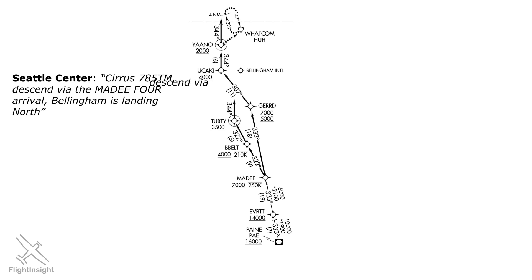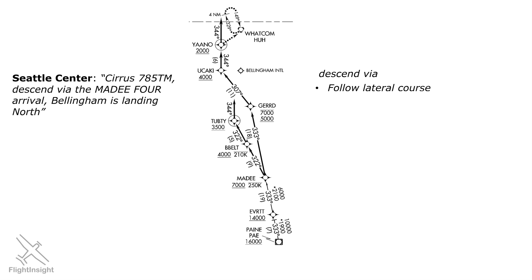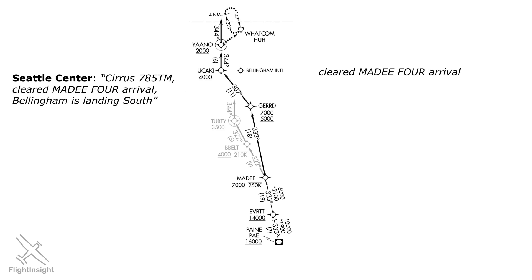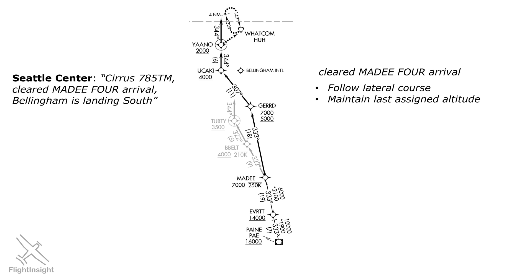The instruction to "descend via" means we're allowed to fly the procedure's lateral course and descend at our discretion from our enroute altitude to meet the altitude and speed restrictions at each point. If ATC tells us we're merely cleared for the MADI-4 arrival, we can fly the lateral course, but we can't leave our last assigned altitude until further instructed.